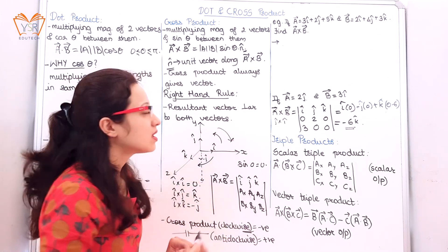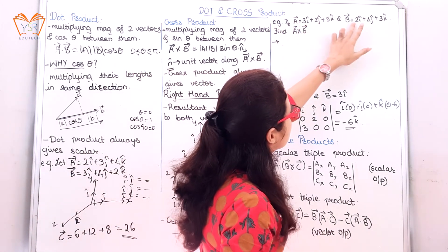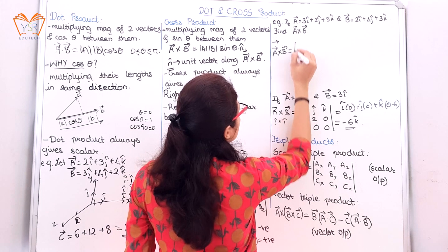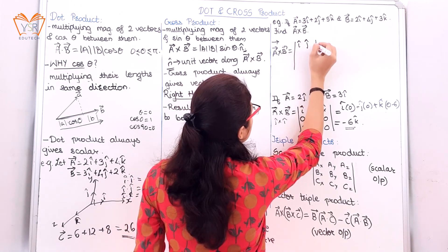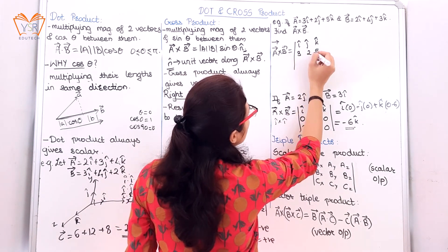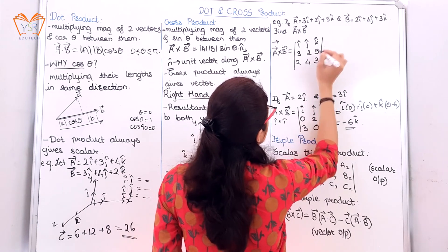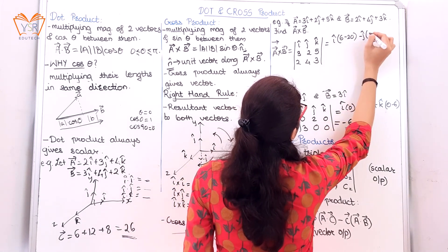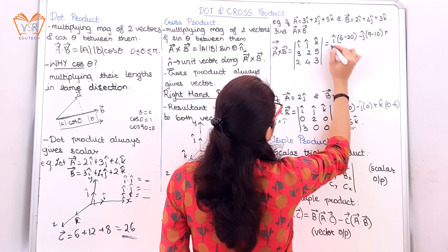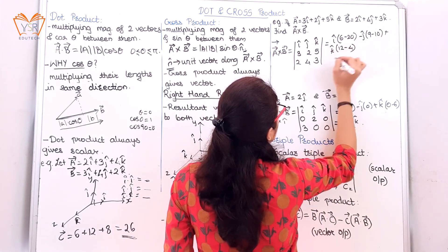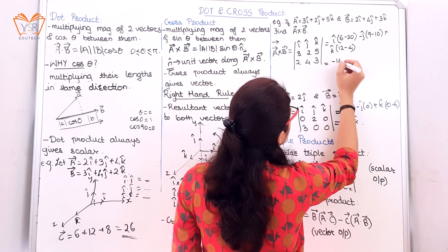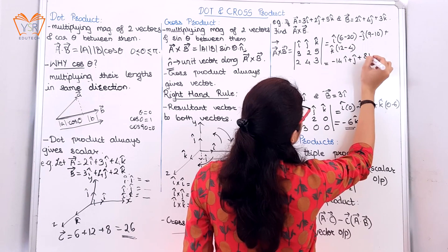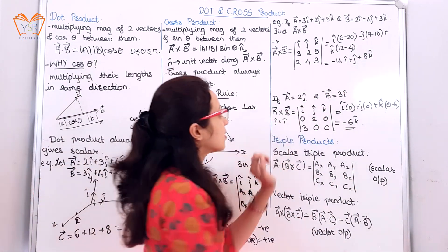Let's consider one more example to make the concept clearer. If a⃗ = 3î + 2ĵ + 5k̂ and b⃗ = 2î + 4ĵ + 3k̂, find the cross product. Setting up the determinant with î, ĵ, k̂ in the first row, coefficients 3, 2, 5 for a and 2, 4, 3 for b: we get î(6−20) − ĵ(9−10) + k̂(12−4) = −14î + ĵ + 8k̂. This is the resultant vector.